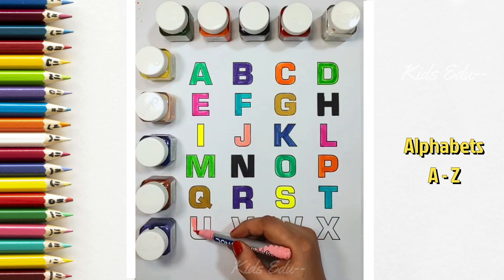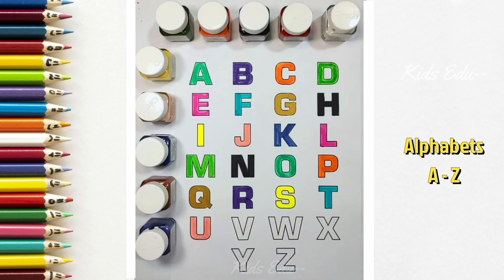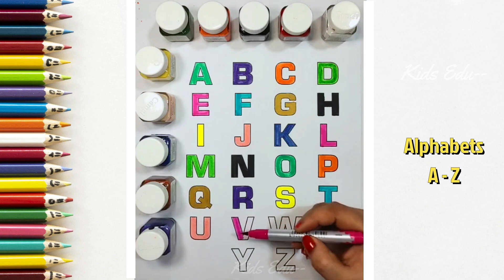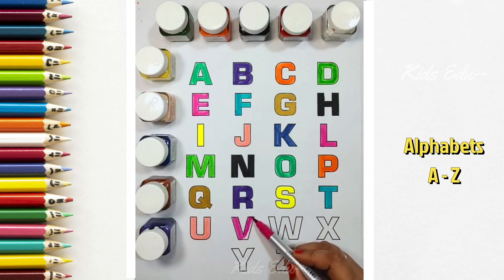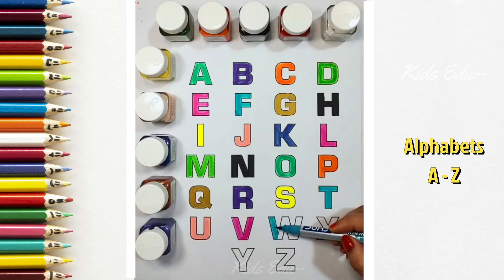Peach color, U, U for Under. Pink color, V, V for Vulture. Sky blue color, W, W for Watch.